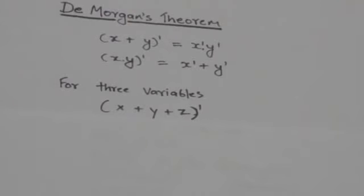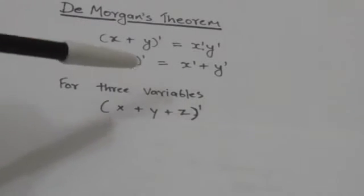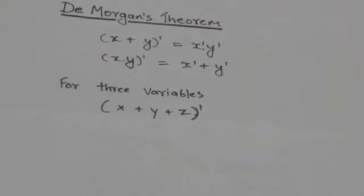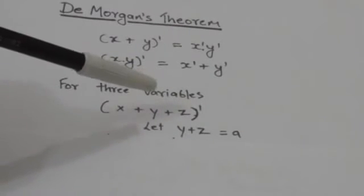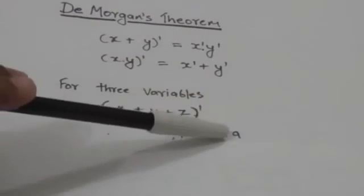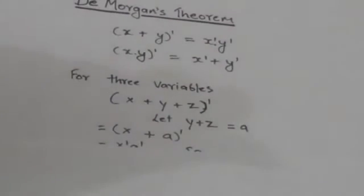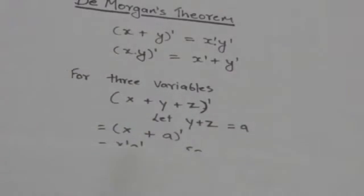Suppose we have to find the complement of the expression X or Y or Z, that is (X + Y + Z) complement. We introduce a Boolean binary variable A whose value is equal to Y or Z. In the expression, we replace Y + Z with this variable A.